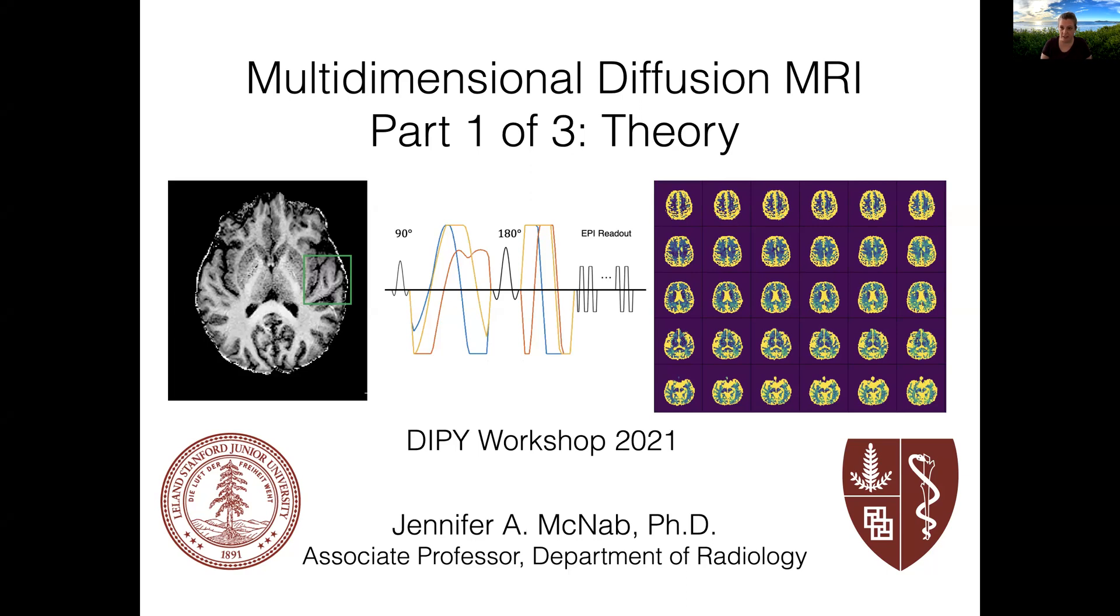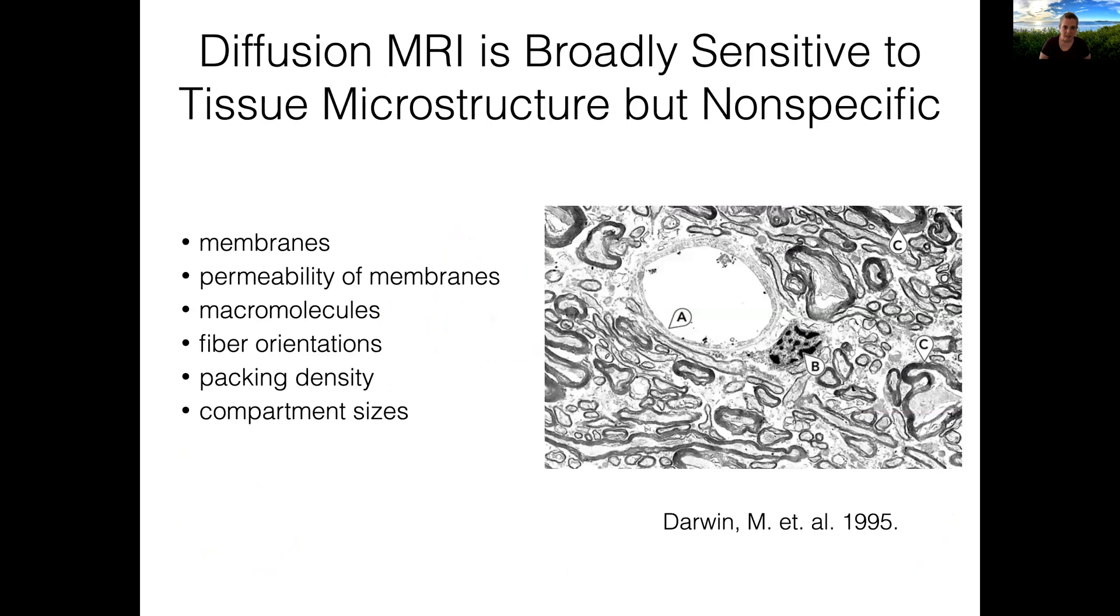Multidimensional diffusion encoding is a very active area of research right now and it's exciting to see so many talented scientists working on this field and trying to propel it forward. The motivation for looking at new types of diffusion encoding stems from the fact that while diffusion MRI is broadly sensitive to many different features of tissue microstructure, it lacks specificity. A change in any one of these features could produce similar change in the signal that we measure.